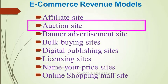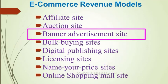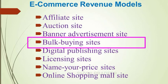Next is the auction site — a kind of website that auctions items on the internet and earns some commission from the sales. For example, eBay website. Next are banner advertisement sites, which display advertisements of other companies on their website and thereby earn revenue. Next are bulk buying sites, which collect a number of users who want to buy similar items, negotiate a discount with the supplier, and take a commission. For example, Alibaba website.